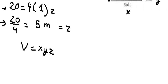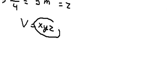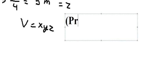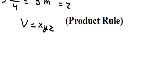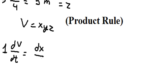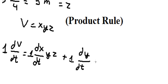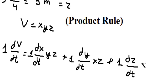We need to take the first derivative of both sides. We can use the product rule. The first derivative of V gives us dV/dt. The first derivative of x gives us dx/dt multiplied by yz. The first derivative of y gives us dy/dt multiplied by xz. The first derivative of z gives us dz/dt multiplied by xy.